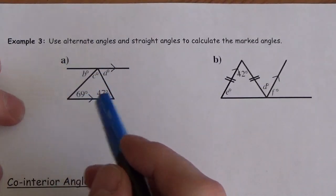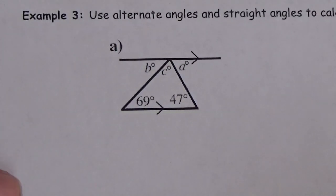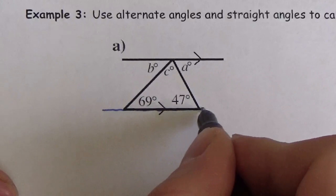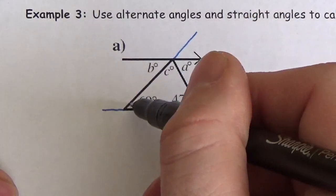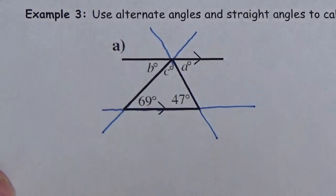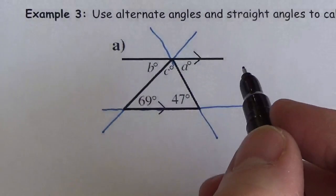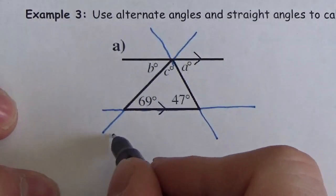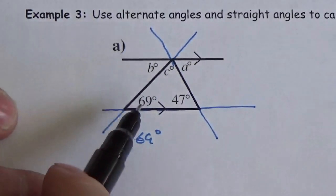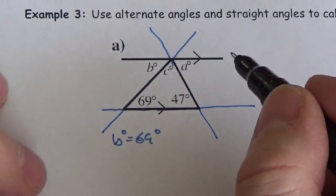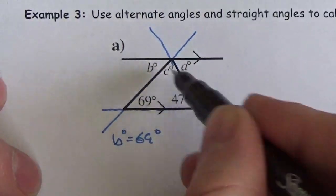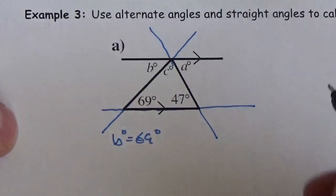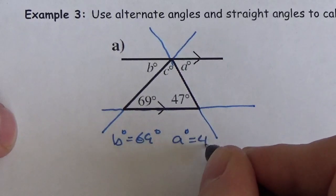The question says: use alternate angles and straight lines to calculate the marked angles. I can see the Z shape right here — angle B must be equal to 69 degrees because they are alternate interior angles. In addition, angle A and 47° are on alternate sides inside between the parallel lines, so angle A must be equal to 47 degrees.